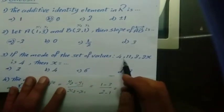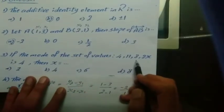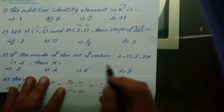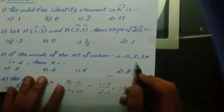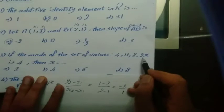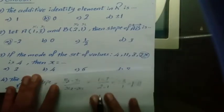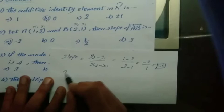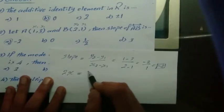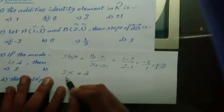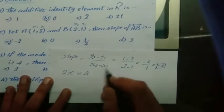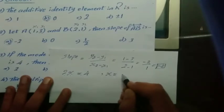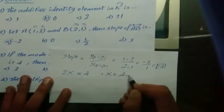If the mode of the set of values 4, 11, 8, 2, x is 4, then x equals what. The mode is 4, so 2x must equal 4. Therefore x equals 4 divided by 2, which gives x equals 2.